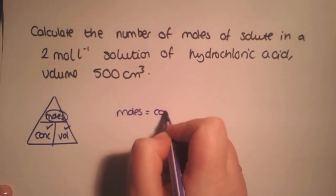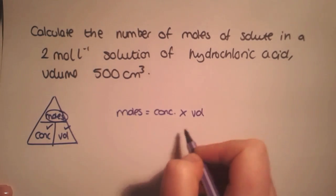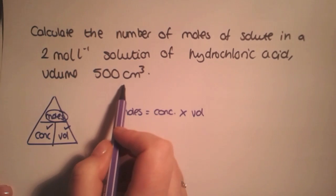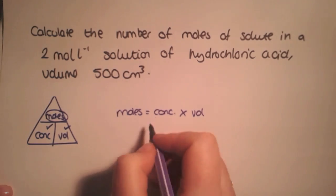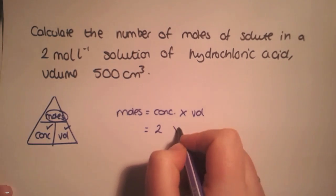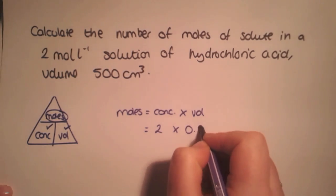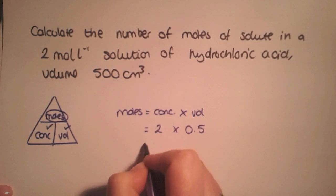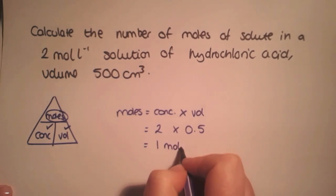Moles equals concentration multiplied by volume. Again, the volume is in centimetres cubed, so we need to divide this by a thousand. So we have a concentration of two and a volume of 0.5 litres. So we must have one mole dissolved into the solution.